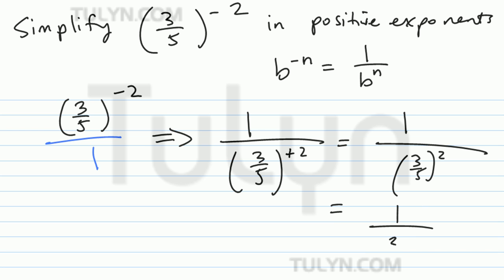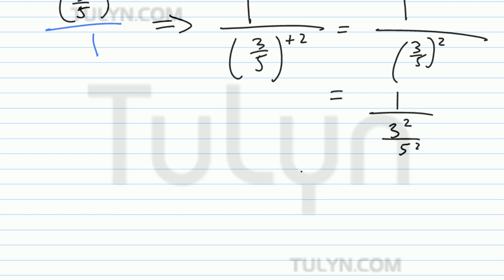And three-fifths to the second power is 3 squared over 5 squared. Let's write this over horizontally: 1 divided by 3 squared over 5 squared. Let's simplify.